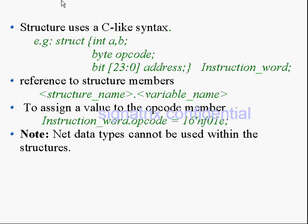Structure uses a C-like syntax. Struct is a keyword, and these are all the members of the structure — A, B, opcode, and address. The structure name is instruction_word. How do you access a particular member in that structure? You have to mention the structure name followed by a dot operator. By using this dot operator we are referencing the member in the structure.